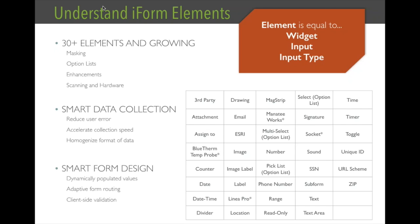Smart data collection also allows you to design smarter forms. Our smarter form design allows you to dynamically populate values on fields — a field can have a default value or a value calculated from a prior input. It also enables adaptive routing, meaning based on a selection, certain elements may or may not be visible, so users only see elements relevant to their data collection path. Finally, client-side validation checks a user's input against certain criteria and prompts them to revisit, amend, and resubmit if the value is not acceptable.